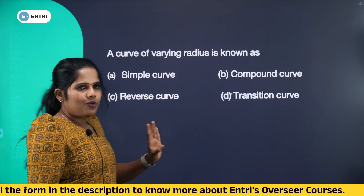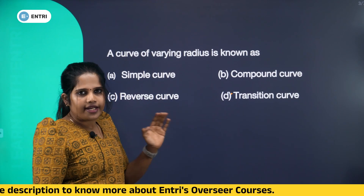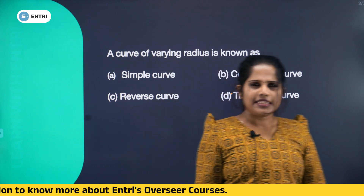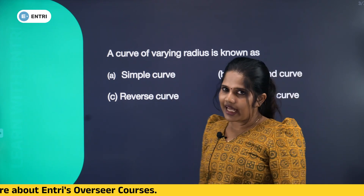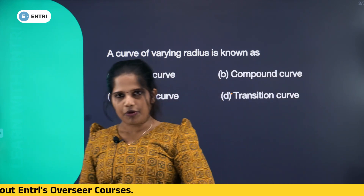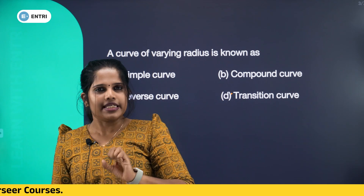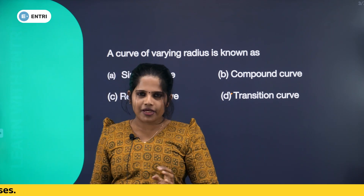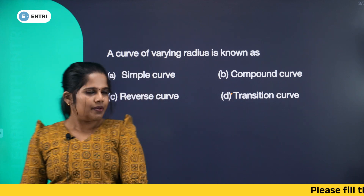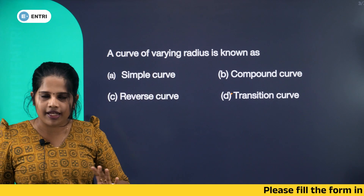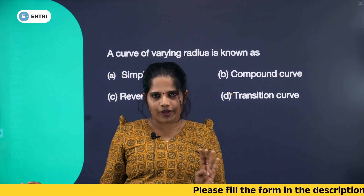What is the question? A curve of varying radius is — this is a topic from survey or highway engineering. Basically it is a topic of surveying, but it can also be applied to highway engineering. If you have a curve with varying radius, let's identify it.